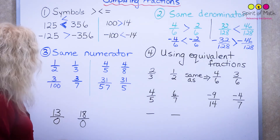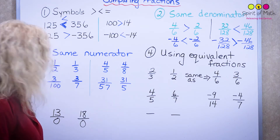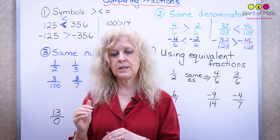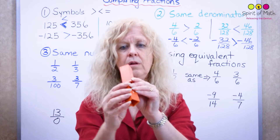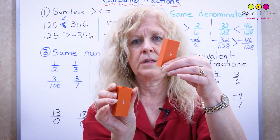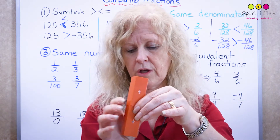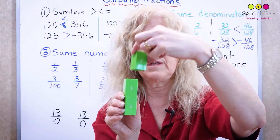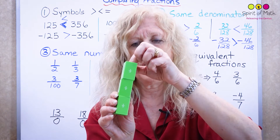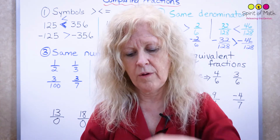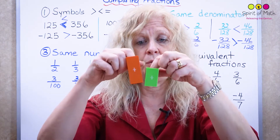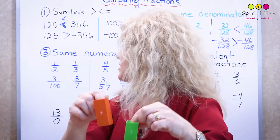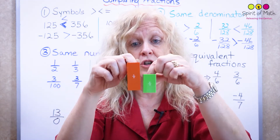Now let's look at fractions with the same numerator. Consider one-half and one-third. One whole divided into two pieces gives you a half-sized piece. If you divide that same whole into three pieces, each piece is smaller. So one-third must be smaller than one-half. You can see that one-half is larger than one-third.